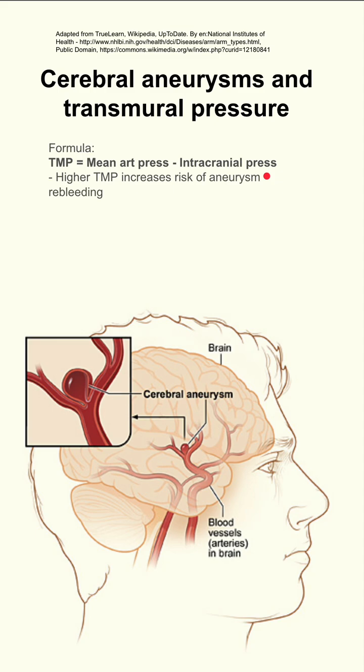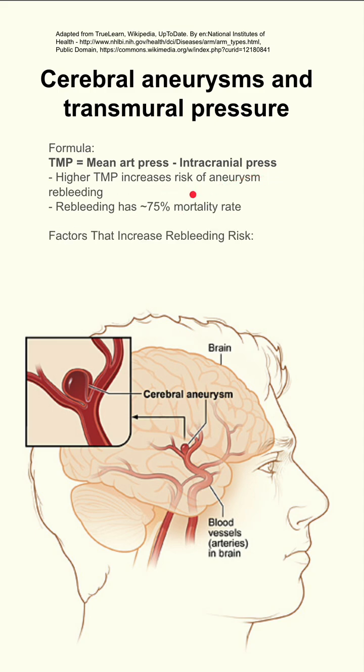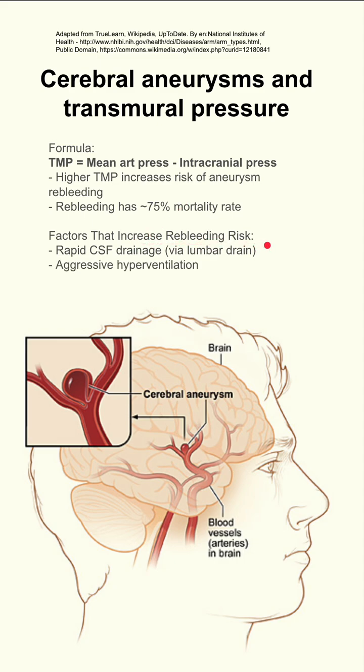A higher transmural pressure increases your risk of aneurysm re-bleeding, and re-bleeding has a 75% mortality rate. There are a number of factors that increase your re-bleeding risk.